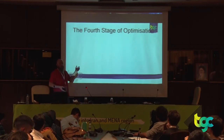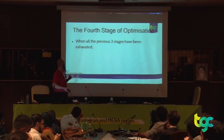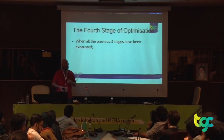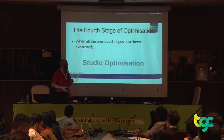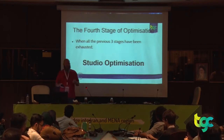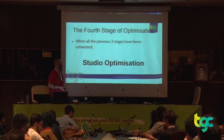There's a fourth stage of optimisation. When all the previous three stages have been exhausted and it's still not running fast enough, there is a very real chance of studio optimisation — which means you optimise the studio itself: less people to work on it, less people to pay, or just shut the entire thing down. You don't want to be there.